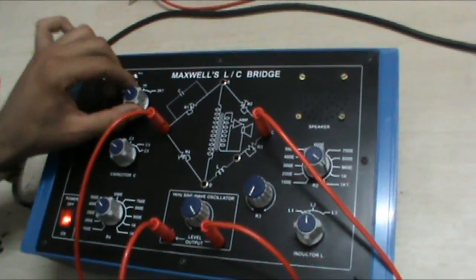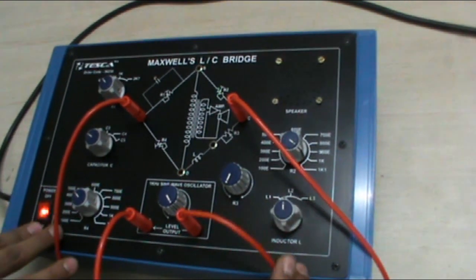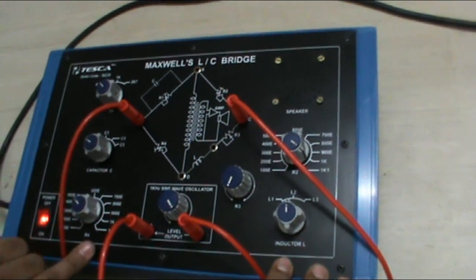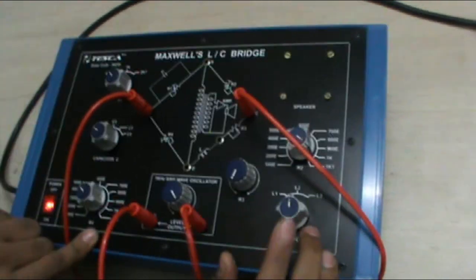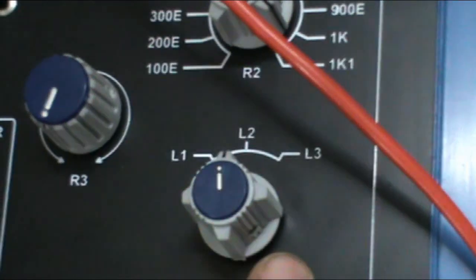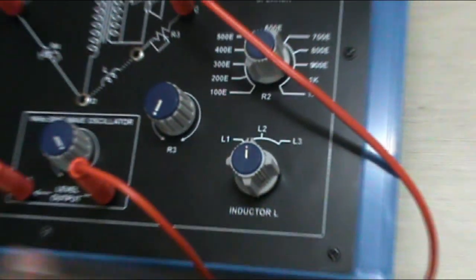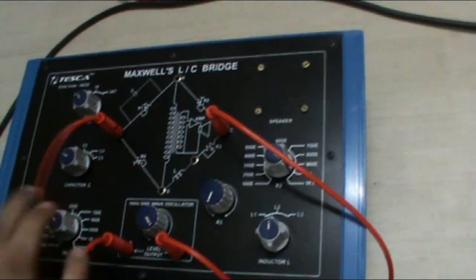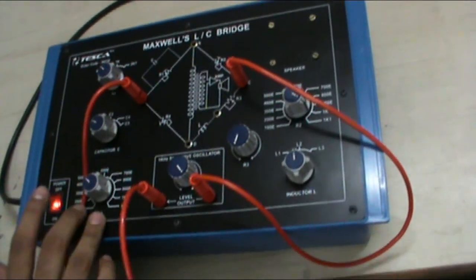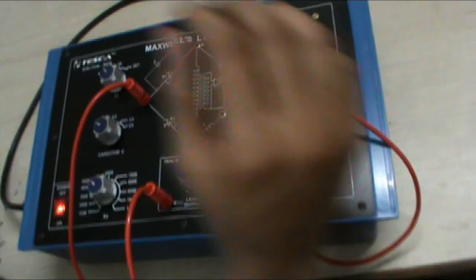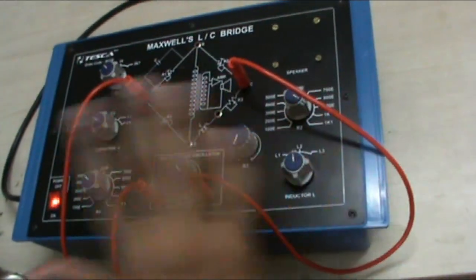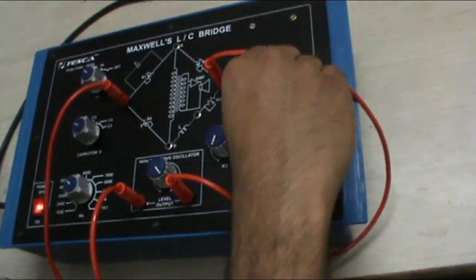We select R1 as 470 ohm. Now we keep the inductor L position to L2 which is 100 mH. Now adjust the position of R2, R3 and R4 such that the volume of the tone should be minimum or negligible. Let's do it.